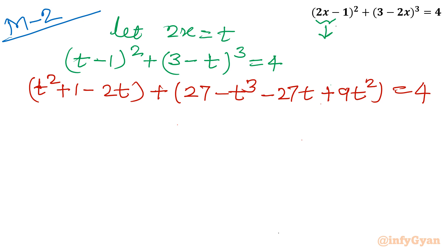Let us add. I will get -t³ + 10t² - 29t + 24 = 0.